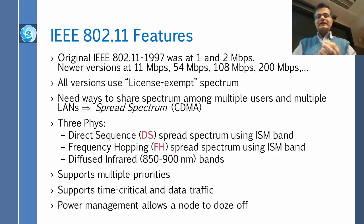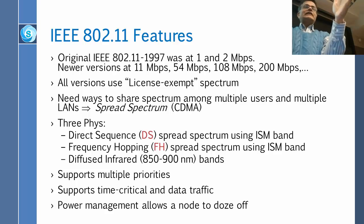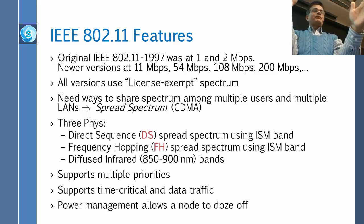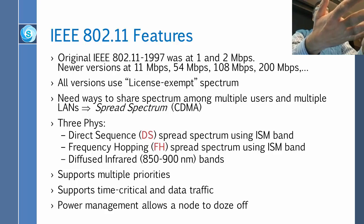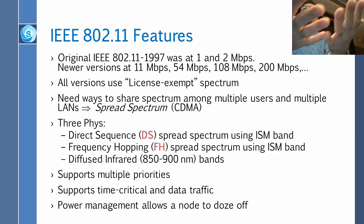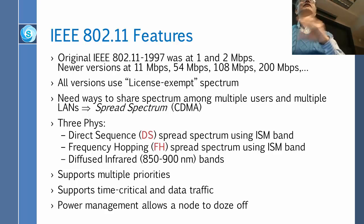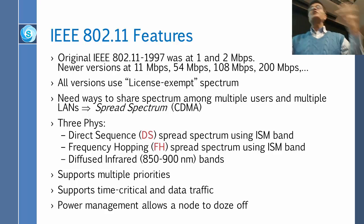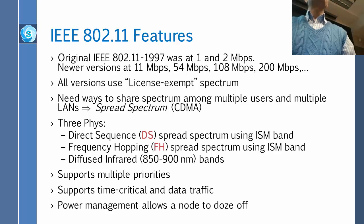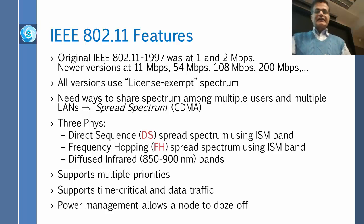Wi-Fi needs ways to share the spectrum among multiple users. When regulators grant a band as license exempt, they require that you cannot just hog it — you have to share it with everybody else. In Wi-Fi, they used spread spectrum to achieve this sharing.